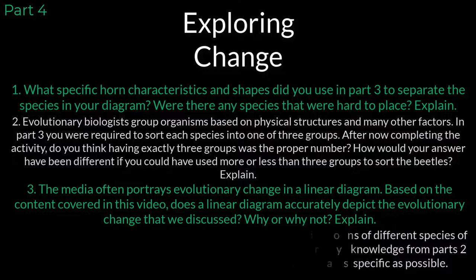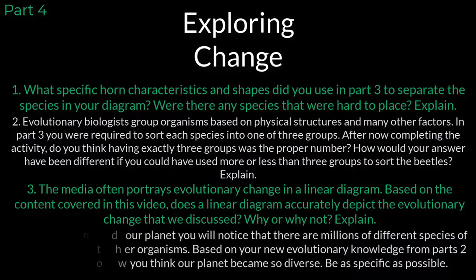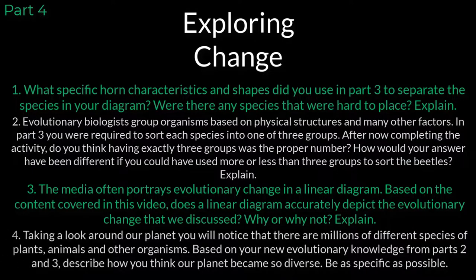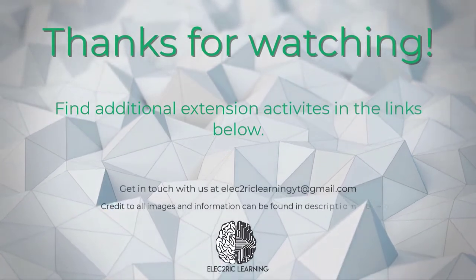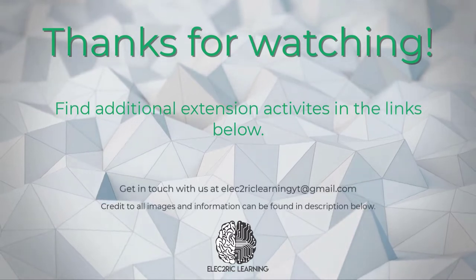Question 4: Taking a look around our planet, you will notice that there are millions of different species of plants, animals, and other organisms. Based on your new evolutionary knowledge from Parts 2 and 3, describe how you think our planet became so diverse. Be as specific as possible. Thanks for taking the time to explore concepts in biology with us. We'll see you next time.